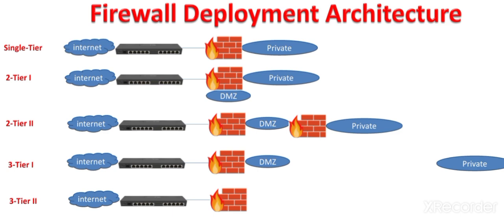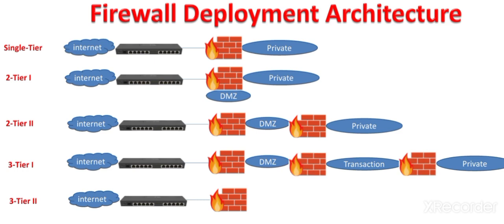In three-tier architecture, we have the same DMZ and private network, but we have an additional network — the transaction network. The transaction network has the supporting services or servers which are required by the DMZ servers. We have deployed two firewalls between all three of these networks. In two-tier architectures we have two networks, in three-tier architecture we have three networks, and in single-tier architecture we have a single network.